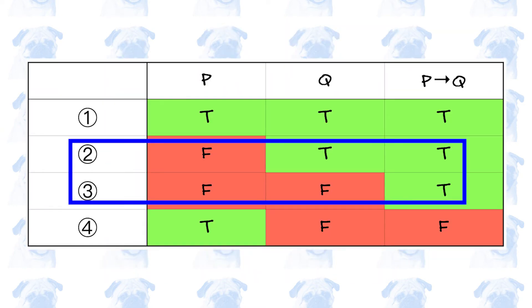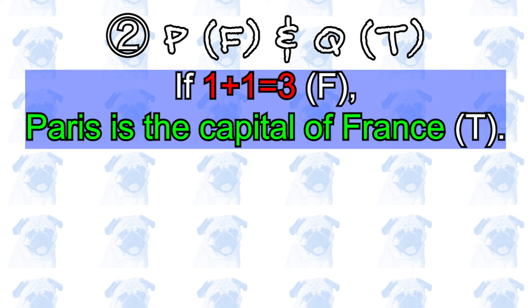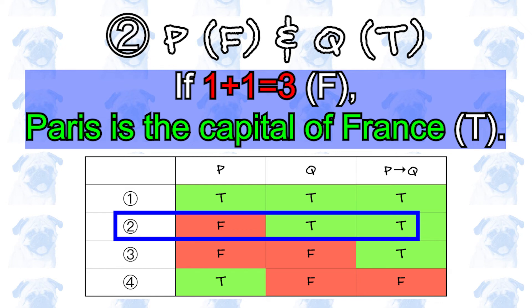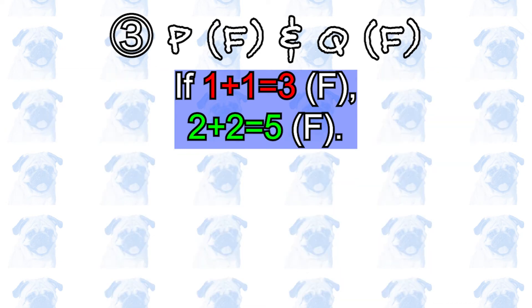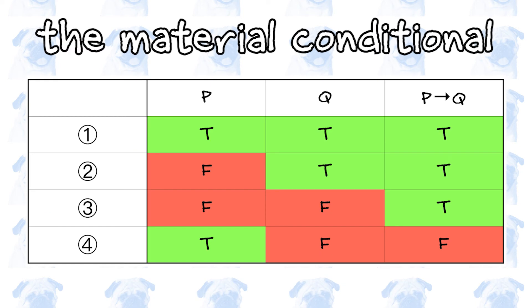Cases 2 and 3, on the other hand, can be very counterintuitive. Consider the conditional statement: if 1 plus 1 is 3, then Paris is the capital of France. Rule number 2 asserts that the antecedent can be utter nonsense as long as the consequent is true — therefore, according to this rule, this statement is true, even though most people would reject it as baloney. Similarly, the conditional statement 'if 1 plus 1 is 3, then 2 plus 2 is 5' is true according to rule number 3, which states that the truth of the consequent doesn't matter as long as the antecedent is false. Again, this statement would be deemed absurd by most people. These peculiar properties of the material conditional can cause misunderstandings when engaging in an argument with someone who has had no education in formal logic.